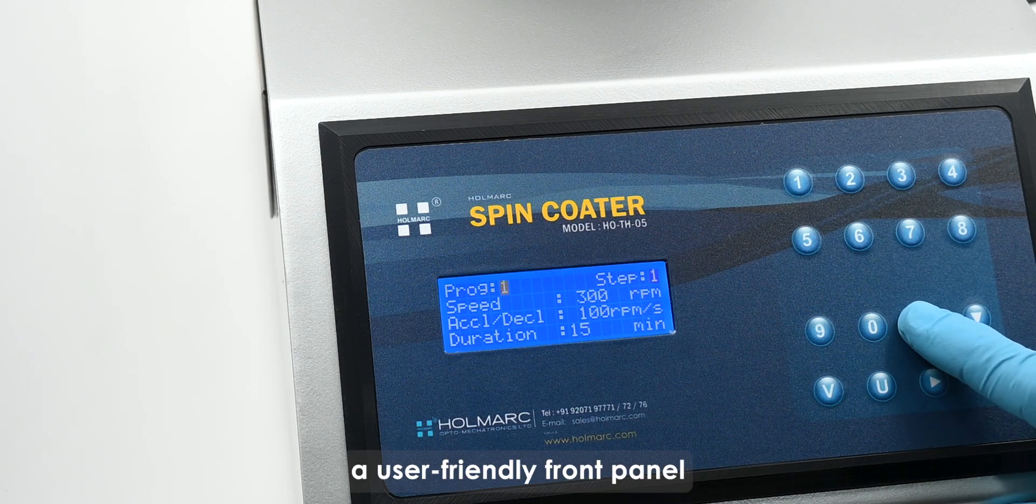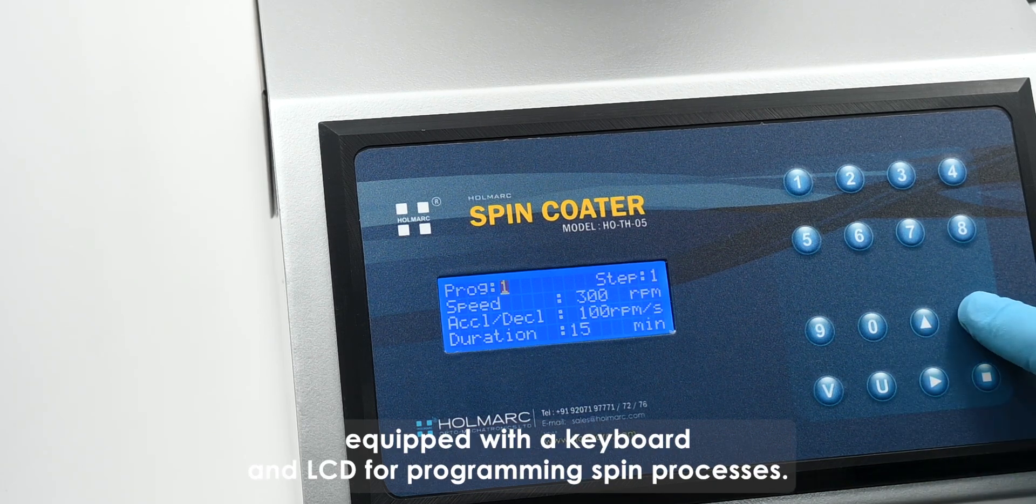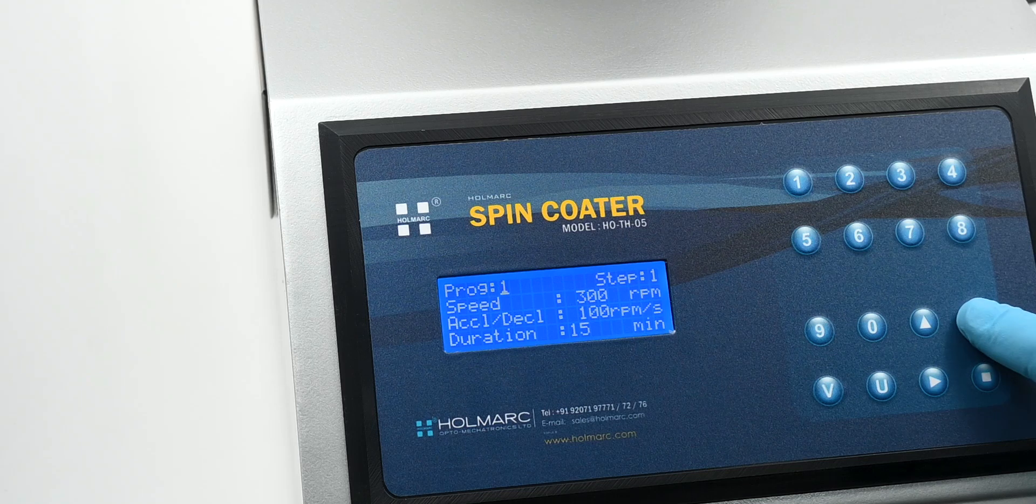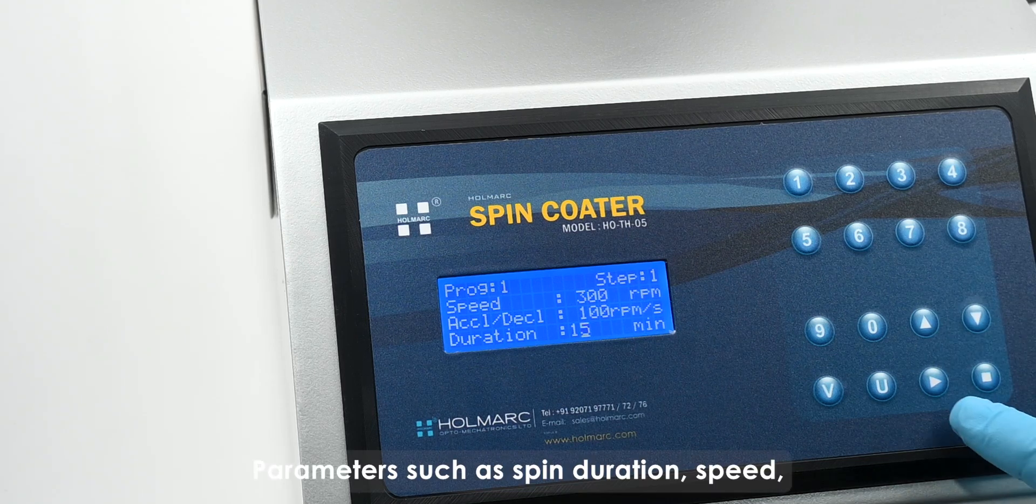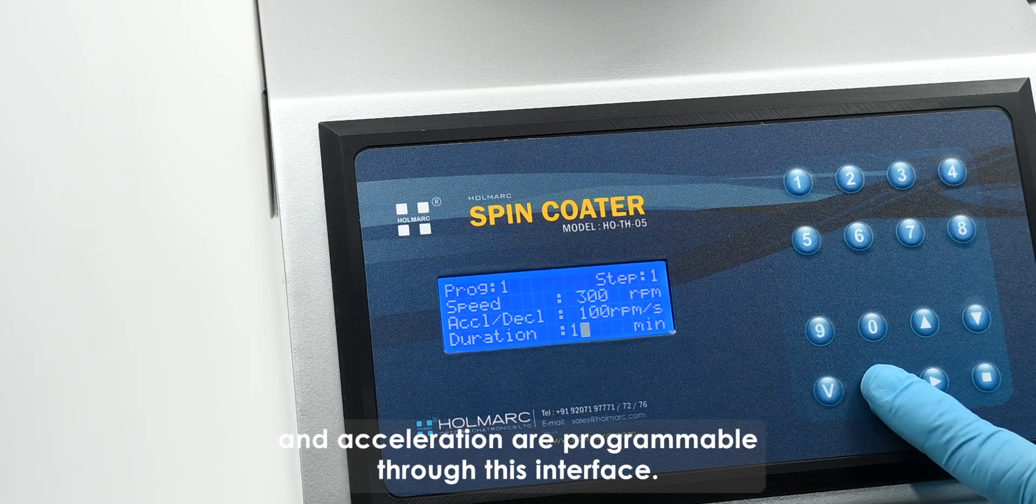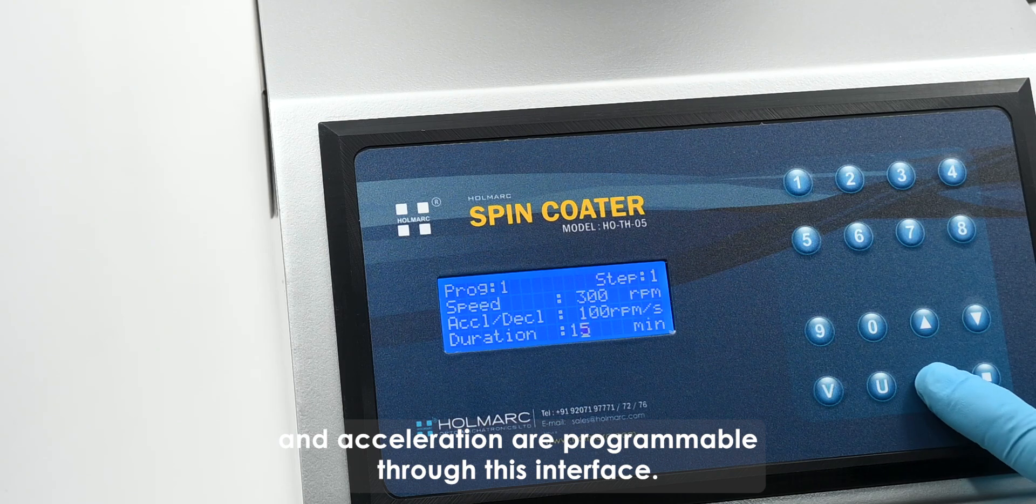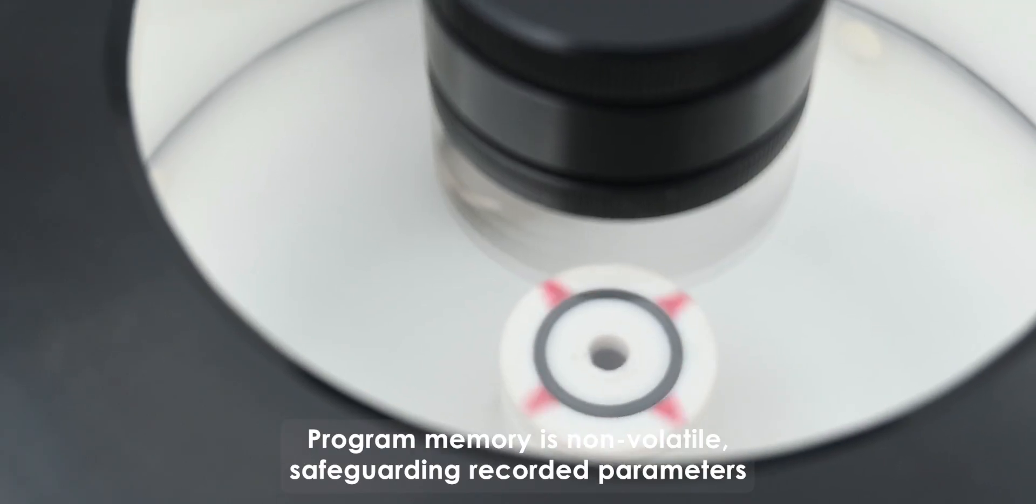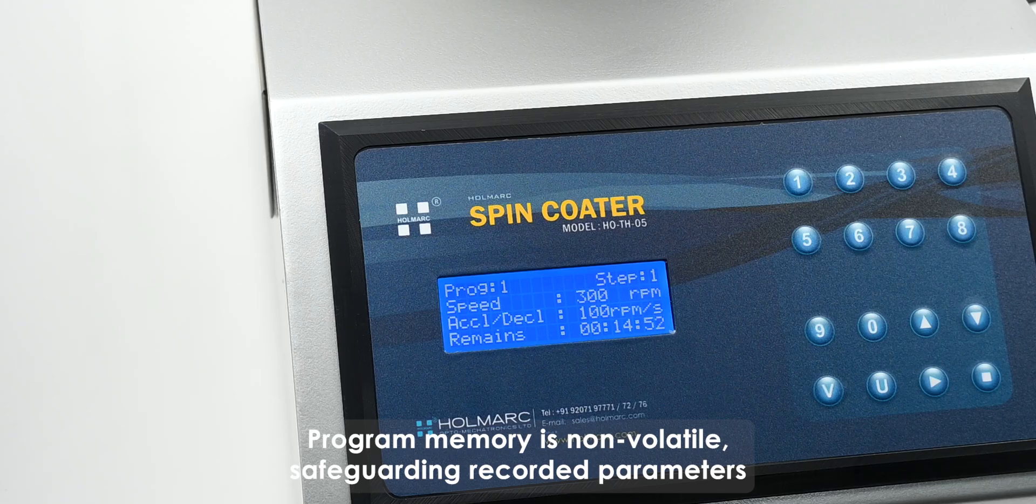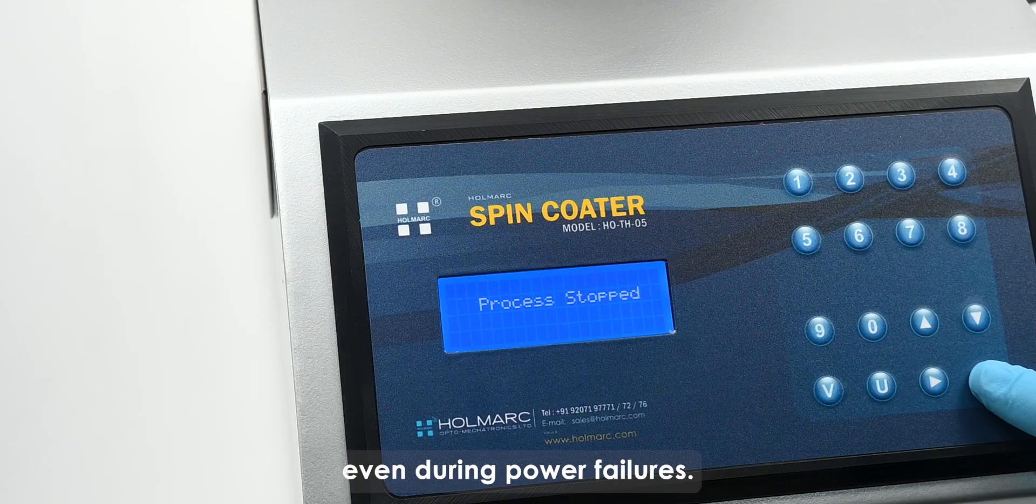The device features a user-friendly front panel equipped with a keyboard and LCD for programming spin processes. Parameters such as spin duration, speed, and acceleration are programmable through this interface. Program memory is non-volatile, safeguarding recorded parameters even during power failures.